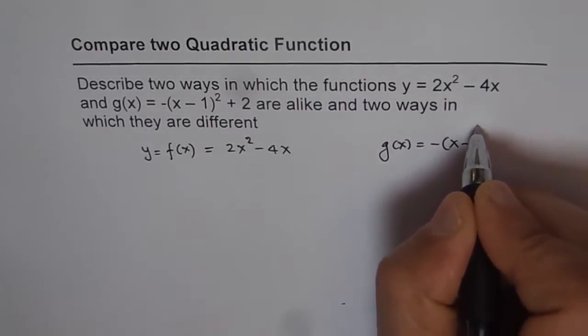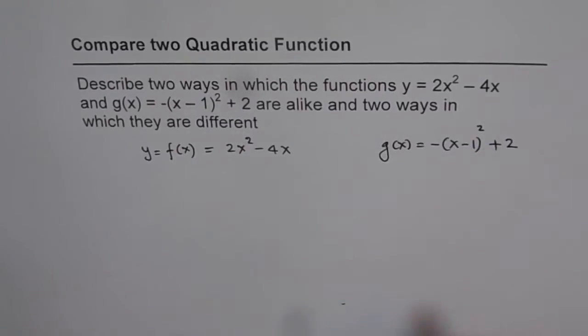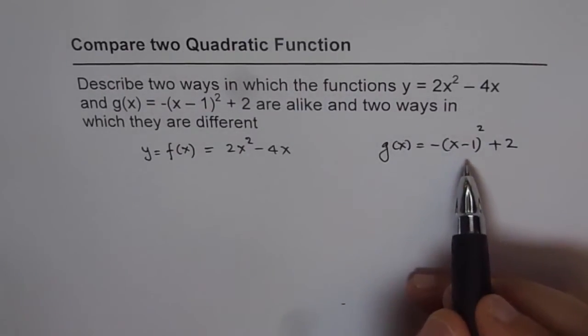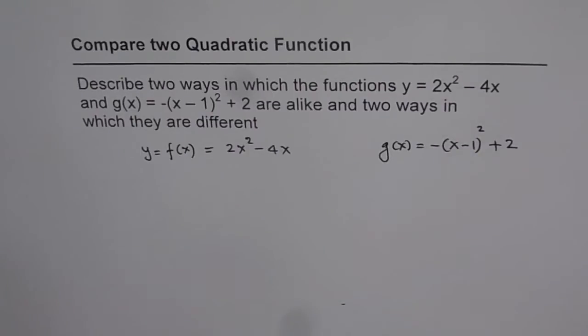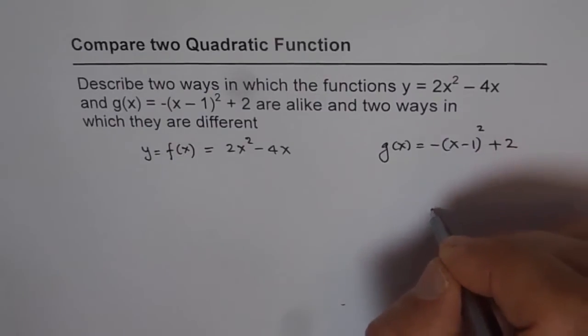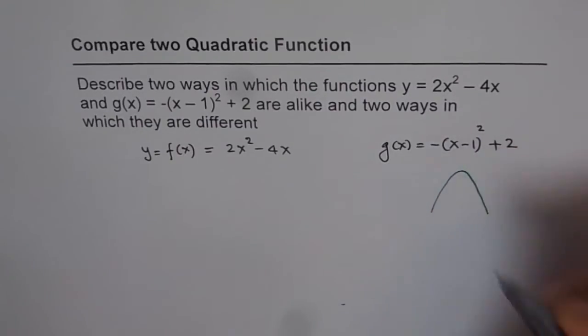Now this is a parabola with vertex at (1, 2) and minus means it is opening downwards. So this parabola is opening downwards and we know the vertex here.